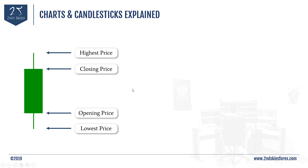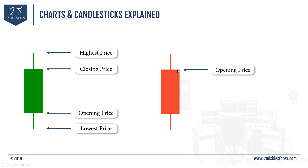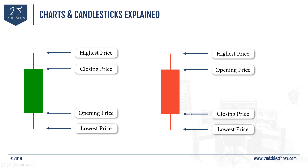The opposite is true for a bearish candle. You have the opening price at the top, the price range illustrated by the top and bottom wick, and then price closed lower than it opened. Price opened up here, moved between the top wick and the lower wick, and then closed lower. This simply means that during this time frame — let's say it's a daily chart — price declined in that particular instrument.